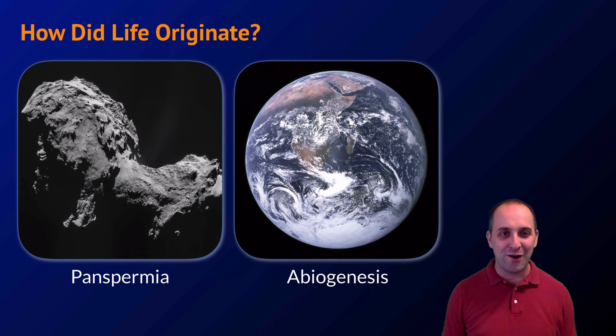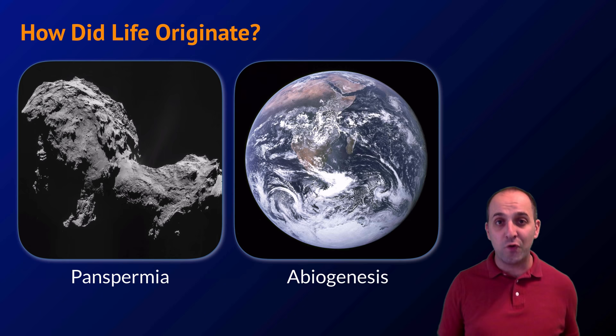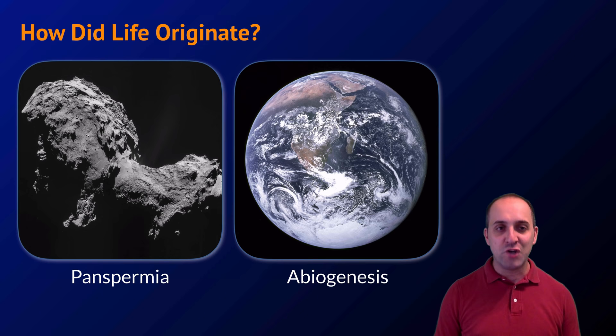Ironically, even though Darwin's book is titled 'On the Origin of Species,' it does not go into the origin of life at all. There are really two scientific models for how life originated — by 'scientific' I mean things that science can investigate. The two major models are panspermia and abiogenesis.